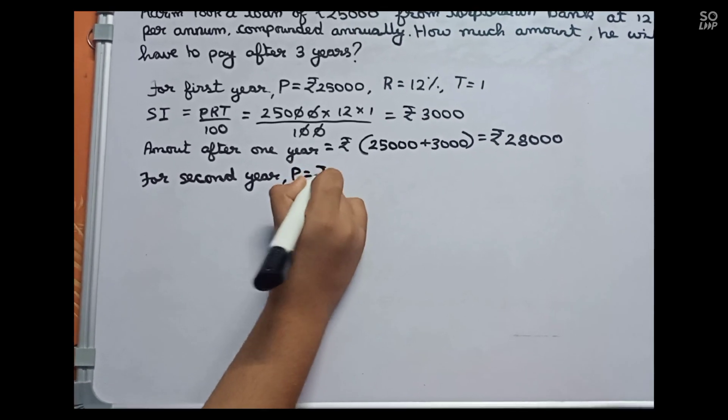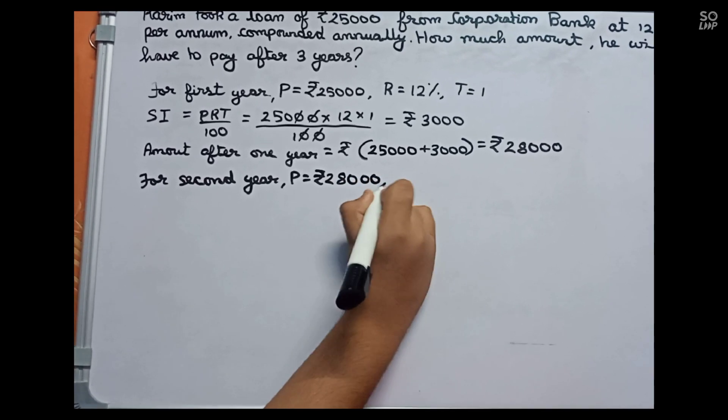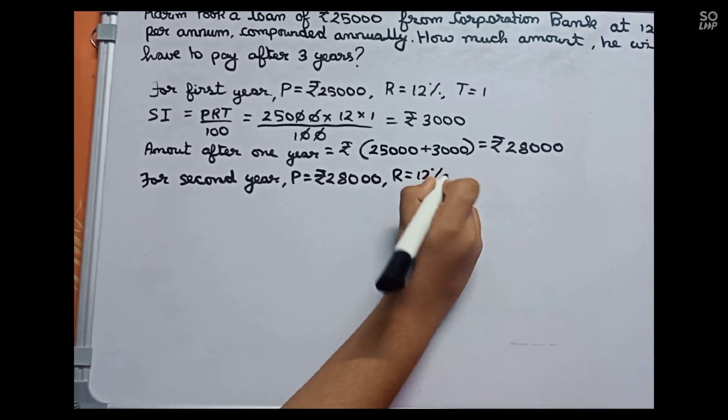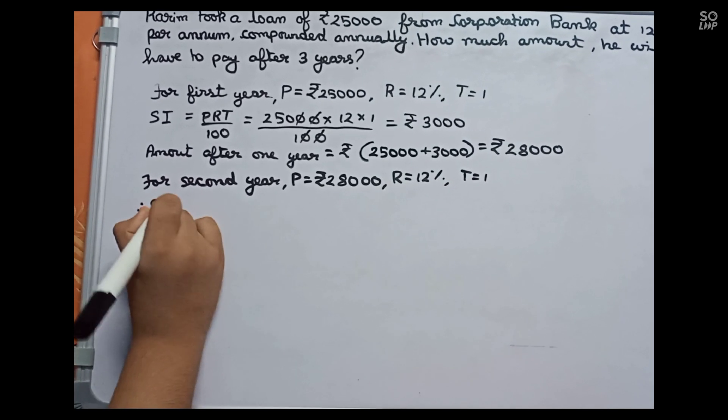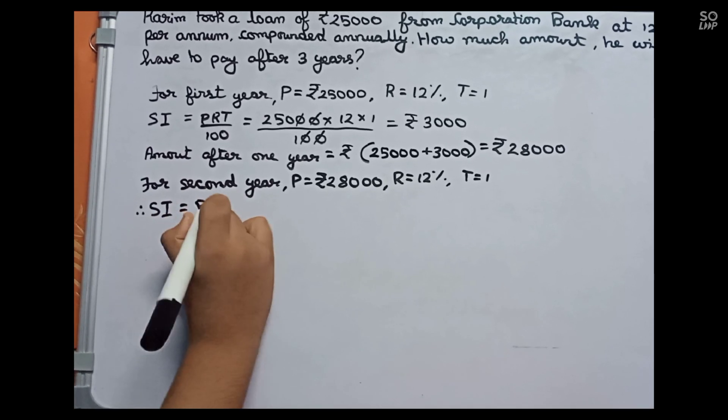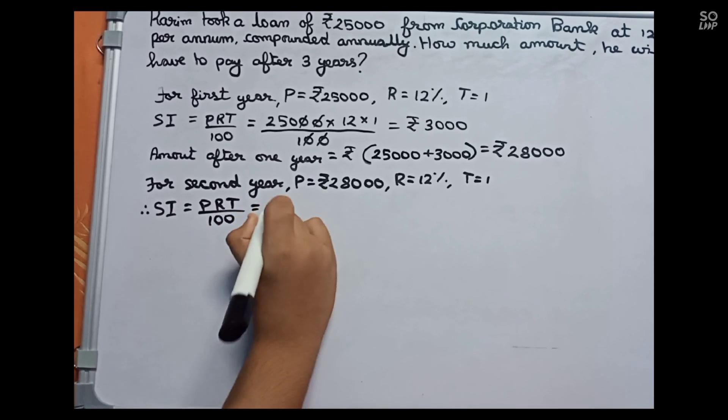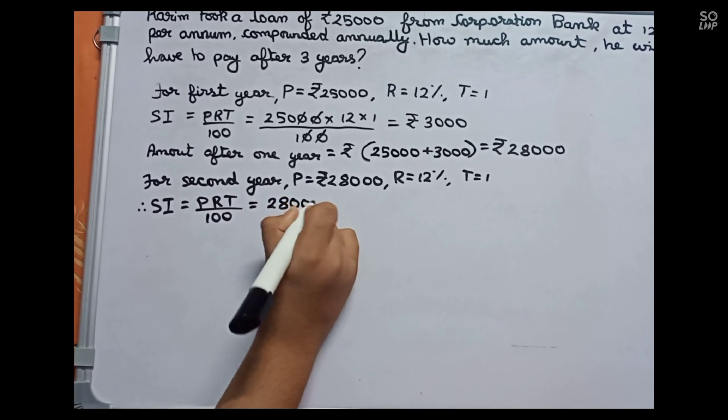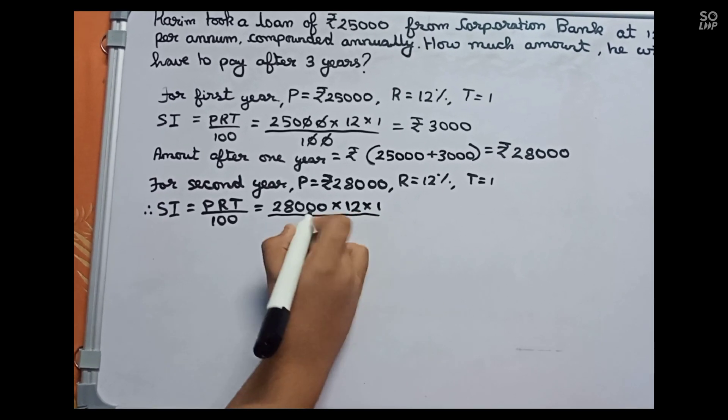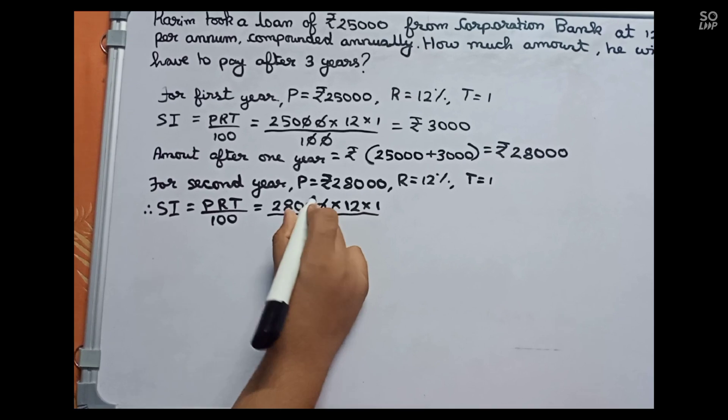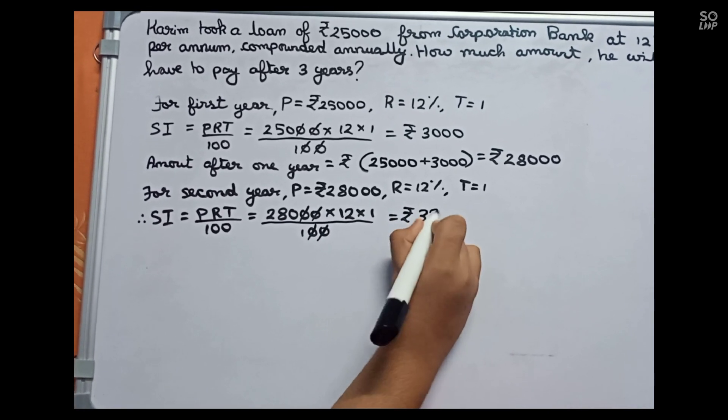Now I find the principal for second year: principal equals to rupees 28,000, rate equals to 12%, and time equals to one year. Therefore SI equals to PRT by 100. So 28,000 into 12 into 1 by 100, and it will become 3,360.